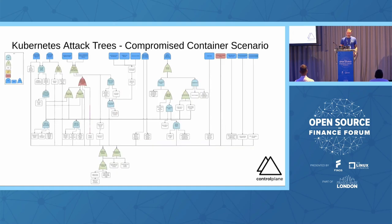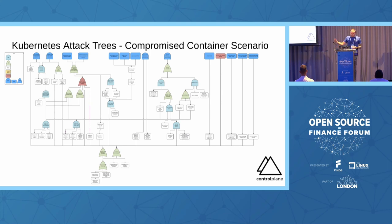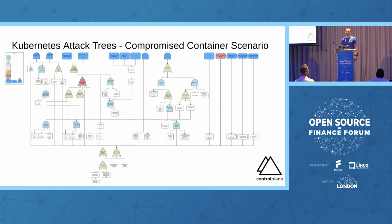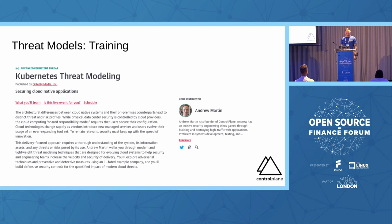From the threat model, the next stage is attack trees. These were built for the CNCF financial services user group three or so years ago. We use these to enumerate the possible failure conditions and apply controls over the branches of the trees so we can see the efficacy of a single control in multiple different locations. Balancing controls and maintainability with developer, operator, and SOC experience from having those controls alert is fundamental to doing a good job. There is an O'Reilly course on threat modeling Kubernetes, again written by Control Plane.